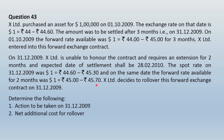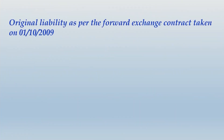To cancel the original buy USD contract on 31/12/2009, the company must sell USD at spot (since it has arrived at the settlement date). The spot bid rate applicable is rupees 44.60. Then, for extension of two months, the company enters a new two-month forward contract to buy USD 1 lakh at the forward ask rate of rupees 45.70. Original liability as per the forward exchange contract taken on 1/10/2009 was rupees 45 lakhs.